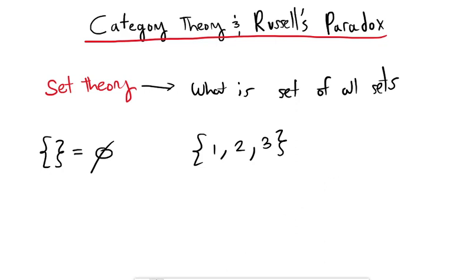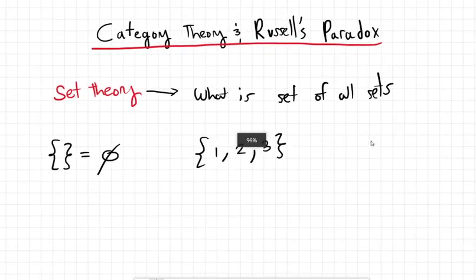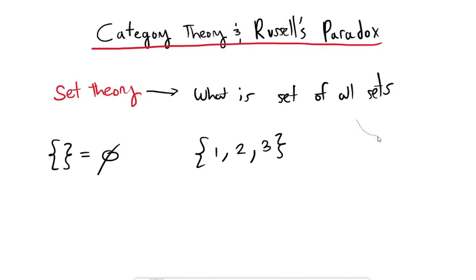I think the original formulation of Russell's paradox was in the form of some situation regarding a barber. Essentially the idea is, does the barber who shaves all those who do not shave themselves shave himself? It ends up reducing down to this question: can you define a set of all sets, and does it contain itself?